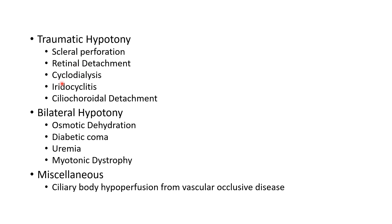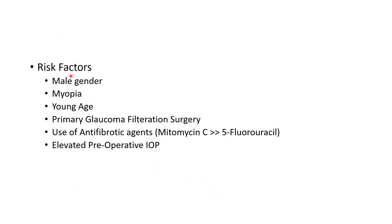Traumatic hypotony can be due to scleral perforation, retinal detachment, cyclodialysis, iridocyclitis, and ciliochoroidal detachment. Bilateral hypotony can occur due to osmotic dehydration, diabetic coma, uremia, and myotonic dystrophy. Miscellaneous causes include ciliary body hypoperfusion from vascular occlusive disease.